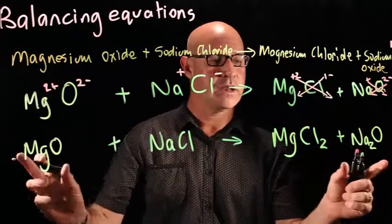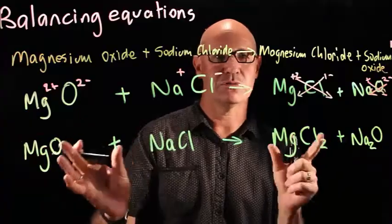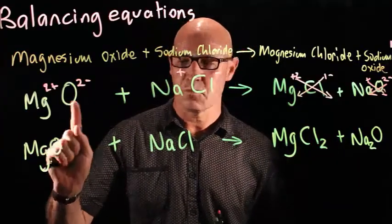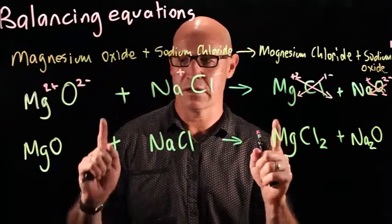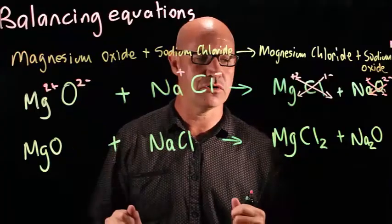So we have now got our molecular formulas correct. Now we need to go ahead and make sure we've got the same number of atoms on each side. Magnesium 1, magnesium 1, we're happy with that. Oxygen 1, oxygen 1. So far so good.